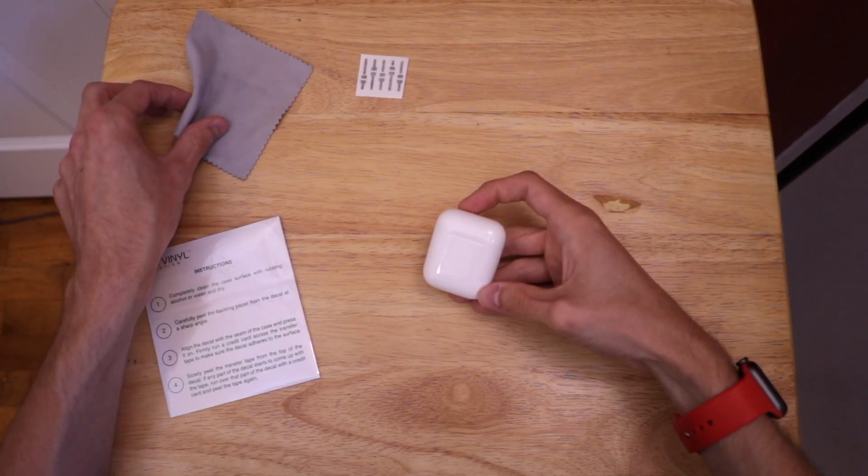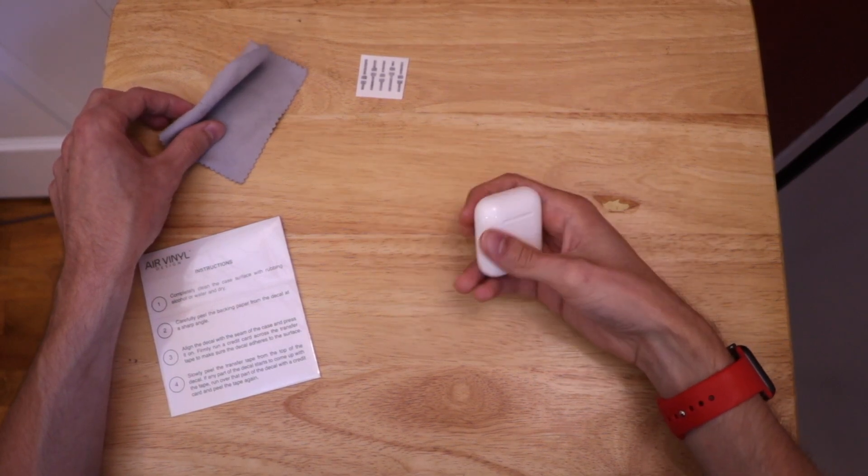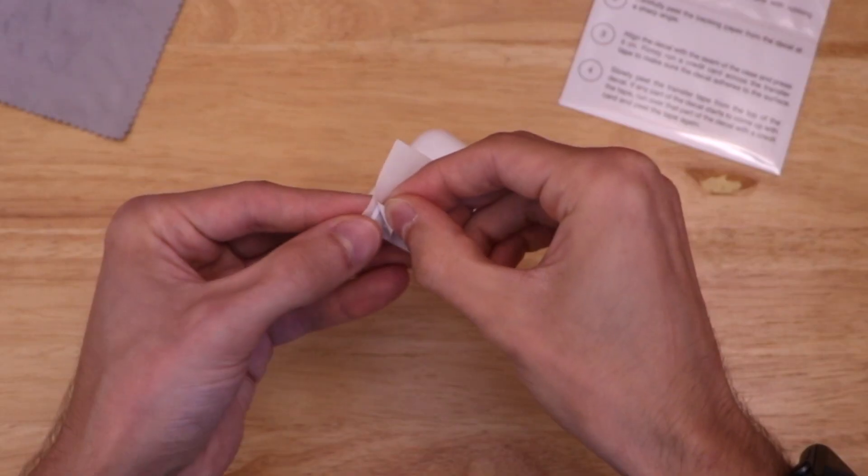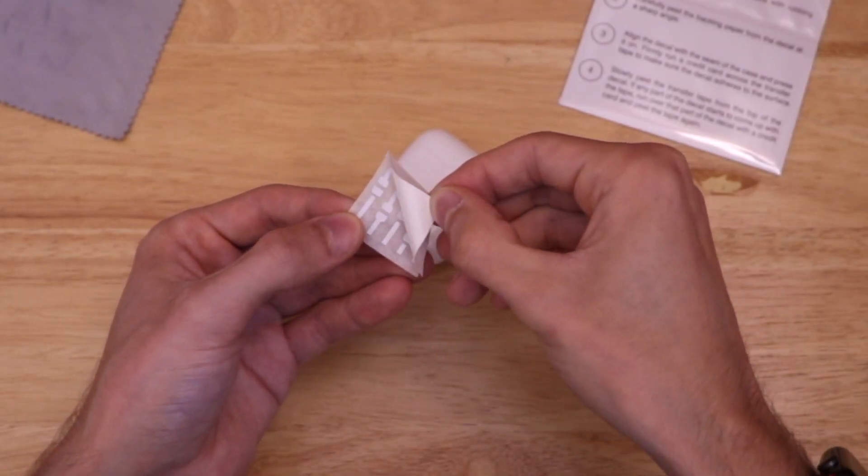The first step in installing one is making sure whatever you're putting it on is clean. This means no smudges or dirt or anything that could result in the sticker coming up later. Next up is what I had the most trouble with, peeling the backing paper off.